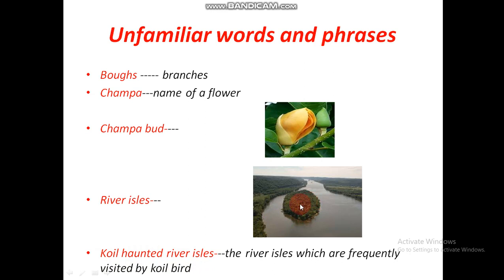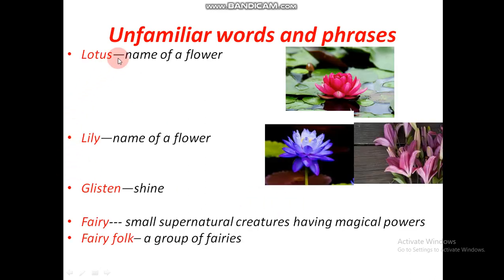Next word: lotus is the name of a flower. Lily is also the name of a flower — there are different types of lilies. Some lilies generally grow in water, and some types grow on land.